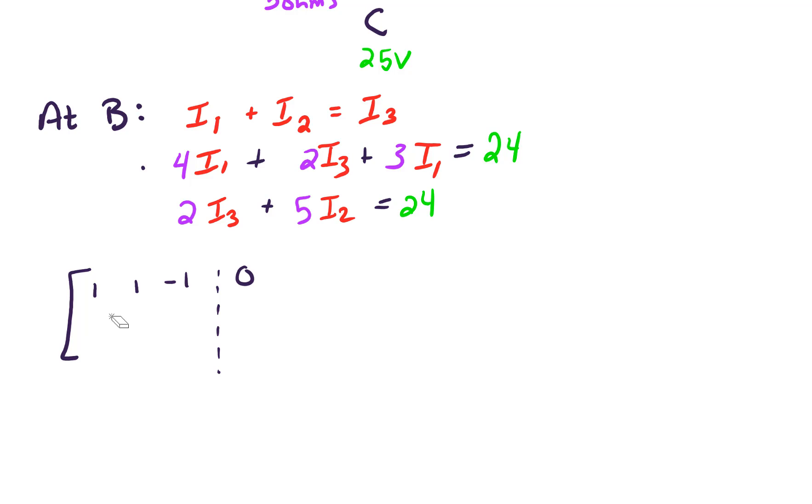Actually, if we add up the I1 and the I1 terms there, like terms, we get a 7, 0, 2, and a 24. And then in our bottom equation here, we have 0 for I1, 5 I2, 2 I3 equals 25.